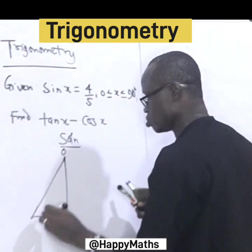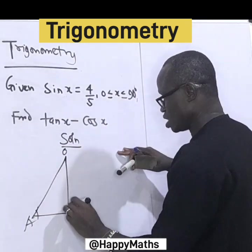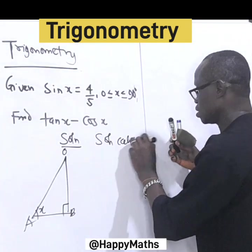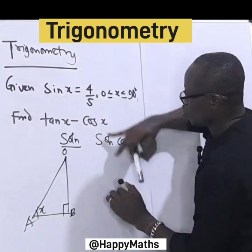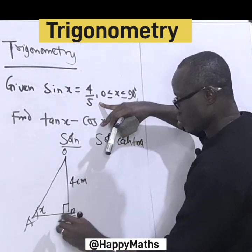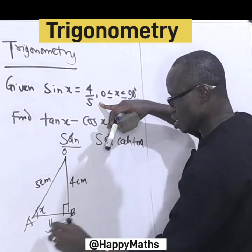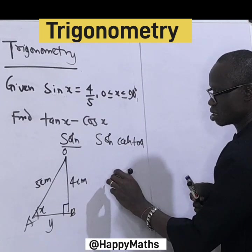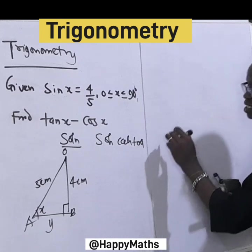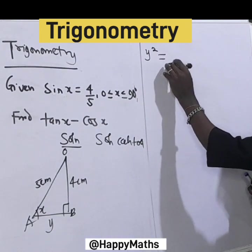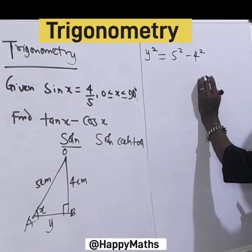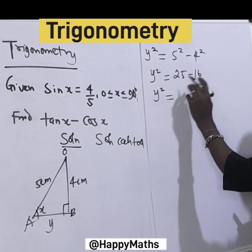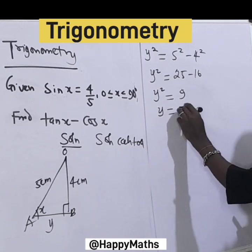Let's label the triangle with angle s. The opposite side is 4 and the hypotenuse is 5. Now let's find the adjacent side AB using the Pythagorean theorem — the square of the hypotenuse minus the square of the opposite side. So y squared equals 25 minus 16, which gives y squared equals 9, therefore y equals 3.